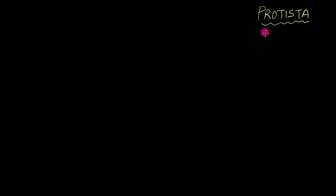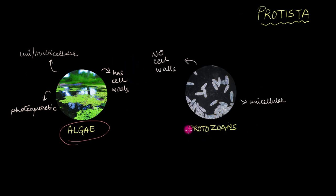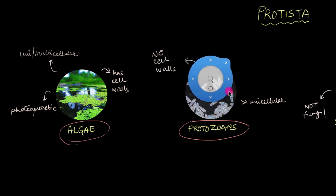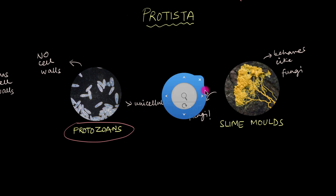The members of Protista come with a variety of characteristics. For instance, some protists like algae can be unicellular or multicellular, are mainly photosynthetic, and almost all of them have cell walls. Other protists like protozoans are always unicellular and they completely lack cell walls.